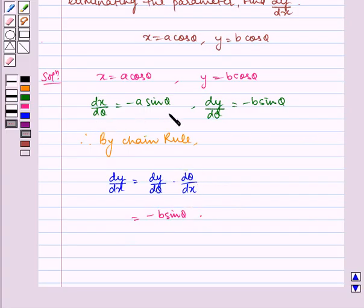by dθ equals minus a sin θ, so dθ/dx equals 1 over minus a sin θ. Now we see that minus and minus gets cancelled, and sin θ and sin θ gets